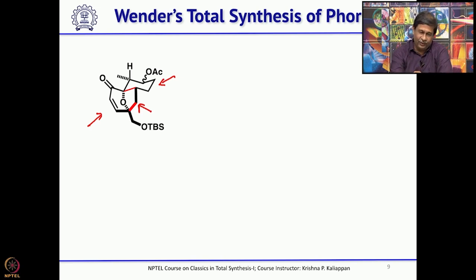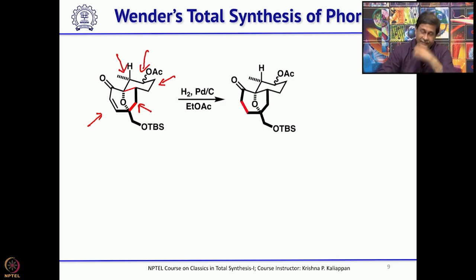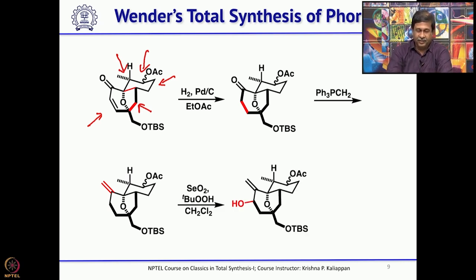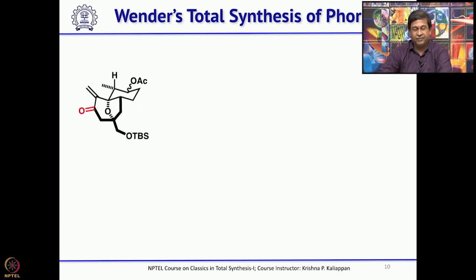During the cycloaddition, the methyl group occupies the more stable equatorial position, and in the major isomer the acetate is also equatorial. Upon hydrogenation, the double bond is removed. A Wittig reaction (VTIC) then introduces the exocyclic double bond. When treated with selenium dioxide, which is known to undergo allylic oxidation, the corresponding allylic alcohol is obtained.